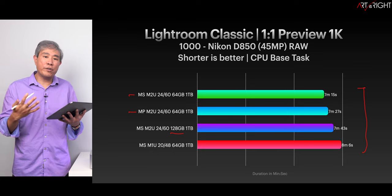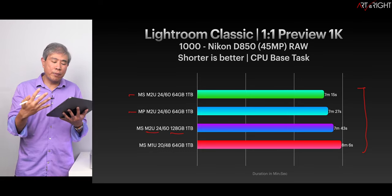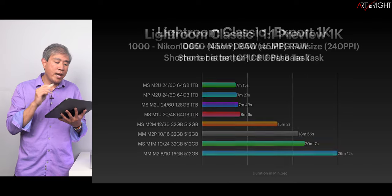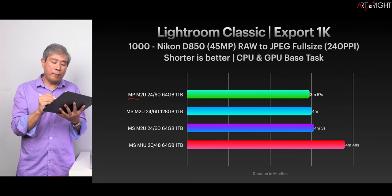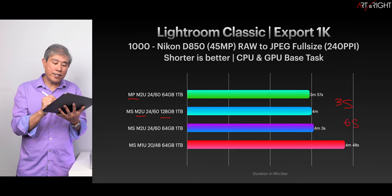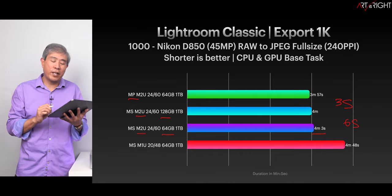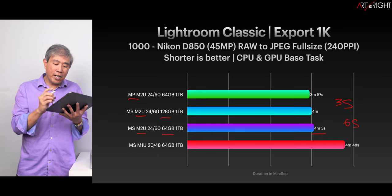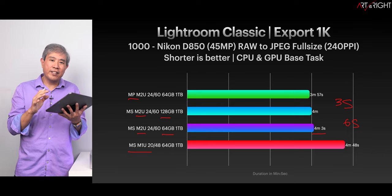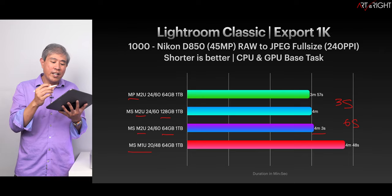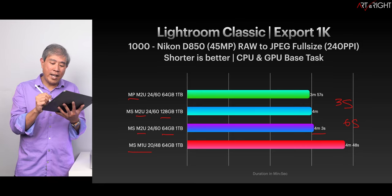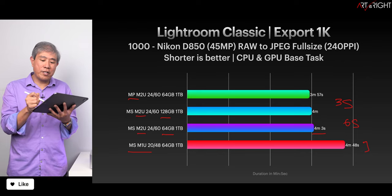Interestingly, bumping up the memory to 128 gigabytes on the M2 Ultra does not really bump up the performance at all for one-to-one preview generation. For the export of 1,000 files, the Mac Pro pulls ahead by a whopping 3 seconds compared to the M2 Ultra with 128 gigabytes, and about 6 seconds faster than the M2 Ultra Studio with 64 gigabytes. I still think the M1 Ultra Studio at base configuration is a really great contender — it's only about 45–48 seconds longer, which is not a big deal at all, and you save a lot of money.